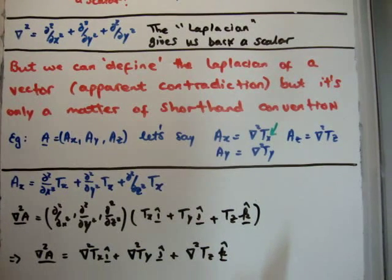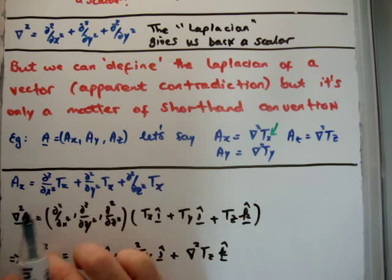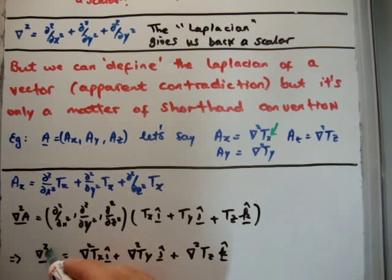So sometimes people might rewrite it this way. So you might say grad squared A is grad squared T sub x in the i hat, grad squared T sub y in the j hat, or grad squared T sub z in the k hat. But to be honest, more often than that, people are lazy in what they say. They actually just say T.